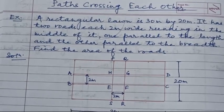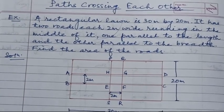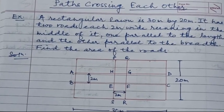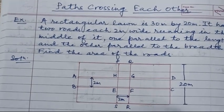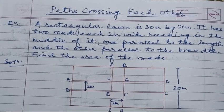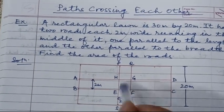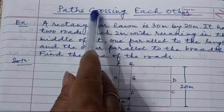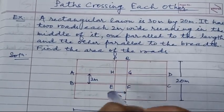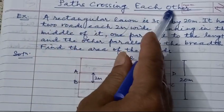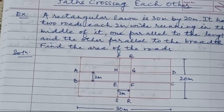Good morning students. Today I am going to start a new topic on perimeter and area. The new topic is paths crossing each other, which is related to perimeter and area.